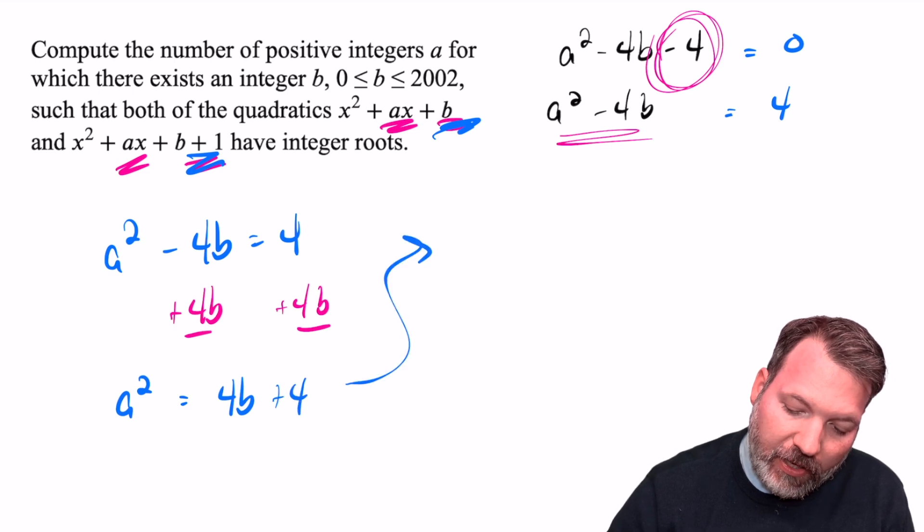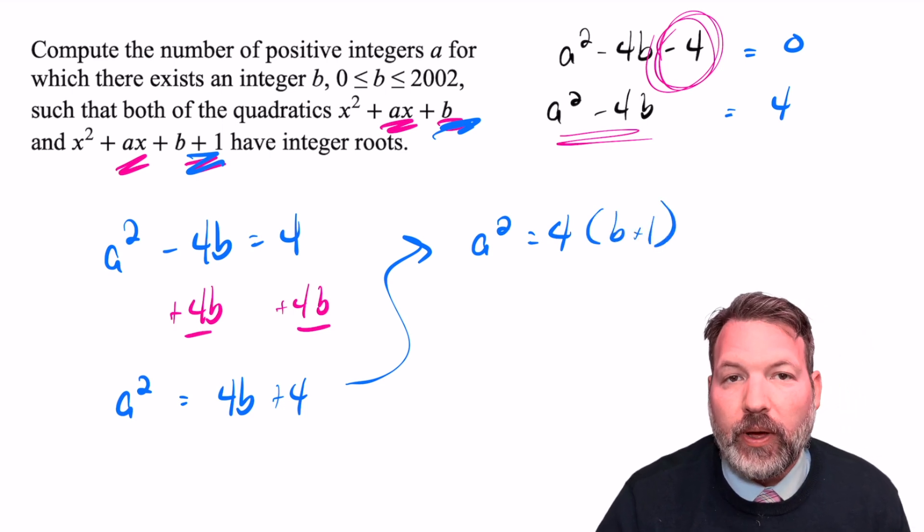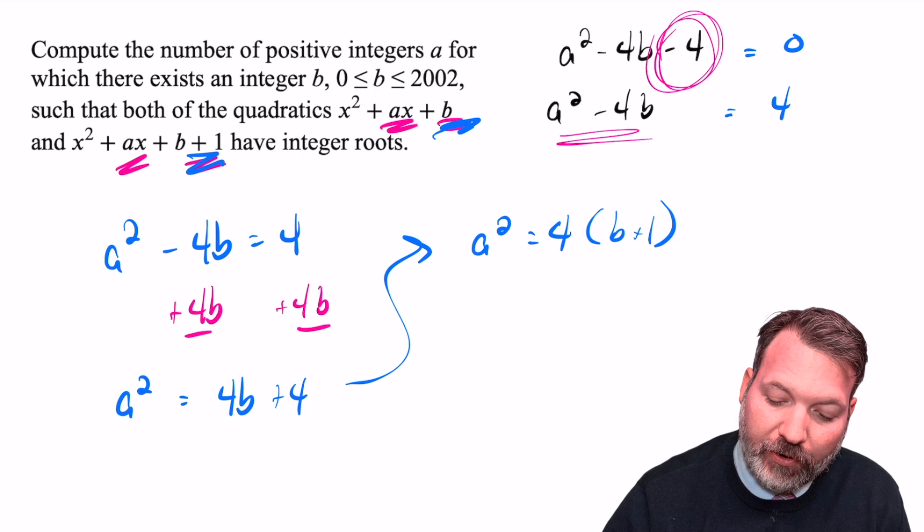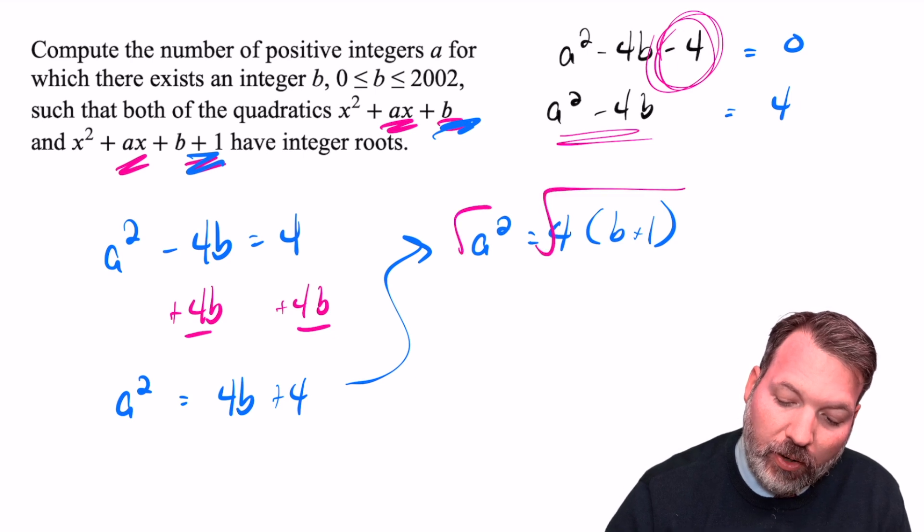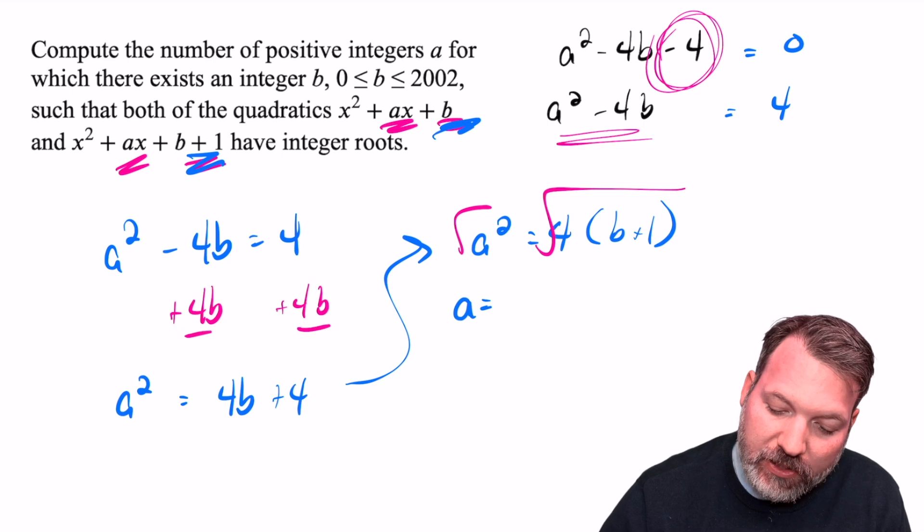We get A² equals 4B + 4, which is another way of saying that A² is equal to 4 times the quantity (B + 1) if we go ahead and factor out that common factor of 4. Taking the square root on both sides, we can see this relationship is really telling us that A is going to be equal to twice the square root of B + 1.